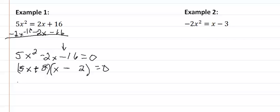Now we set each one of those factors equal to zero. So we have 5x plus 8 equal to zero, and x minus 2 equal to zero, and then we solve.